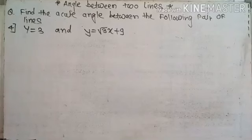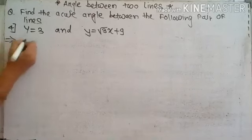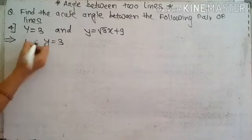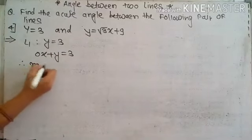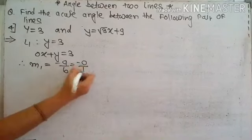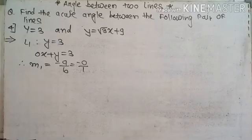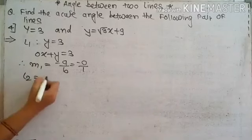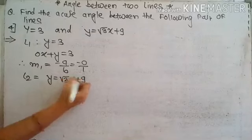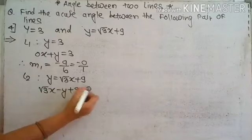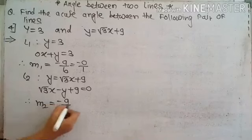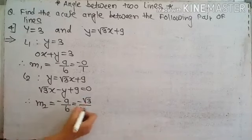Next: the two lines given are y equal to 3 and y equal to root 3 x plus 9. The first line y equal to 3 can be written as 0x plus y equal to 3. Therefore slope M1 equals minus A upon B, which is minus 0 upon 1, equal to 0. For the second line y equal to root 3 x plus 9, rewritten as root 3 x minus y plus 9 equal to 0, slope M2 equals minus A upon B, that is minus root 3 upon minus 1, equal to root 3.